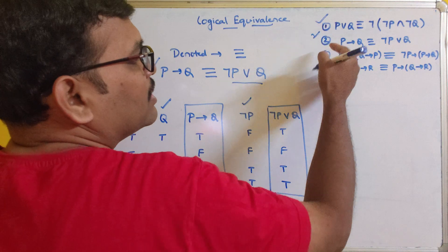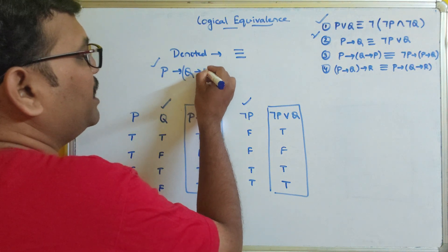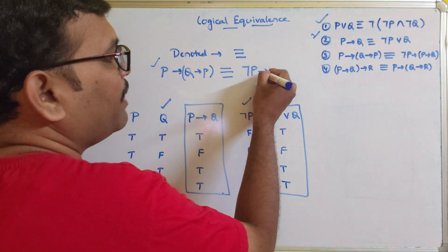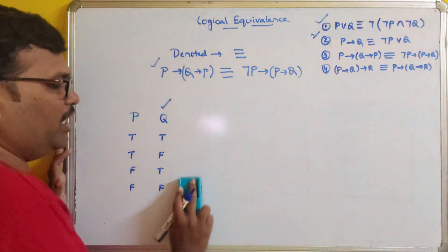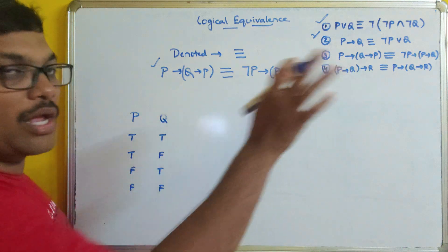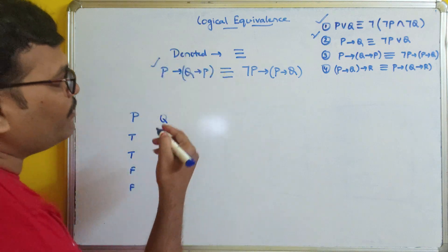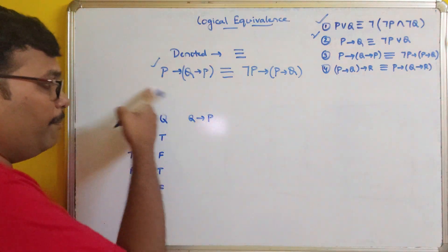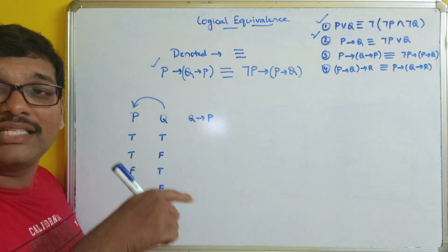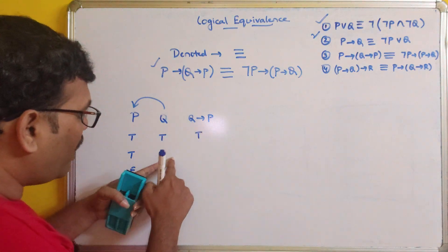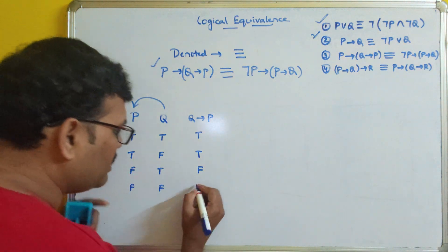Third example: P implies Q implies Q implies P, logically equivalent to negation P implies P implies Q. There are only two propositions, so four combinations. We first calculate Q implies P — if Q is true and P is false, it is false; all other cases are true. So: true/true is true, false/true is true, true/false is false, false/false is true. Then P implies this result gives: P true and true is true, false and false is true, false and true is true, and it will be false only if P is true and Q implies P is false.